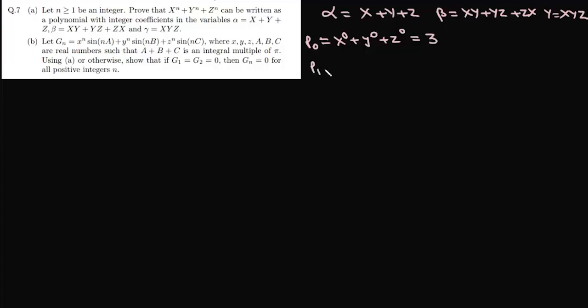Let us start with p0 = x^0 + y^0 + z^0 = 3. Then p1 = x + y + z, which is simply α. So p1 is a polynomial with integer coefficients in α, β, γ.